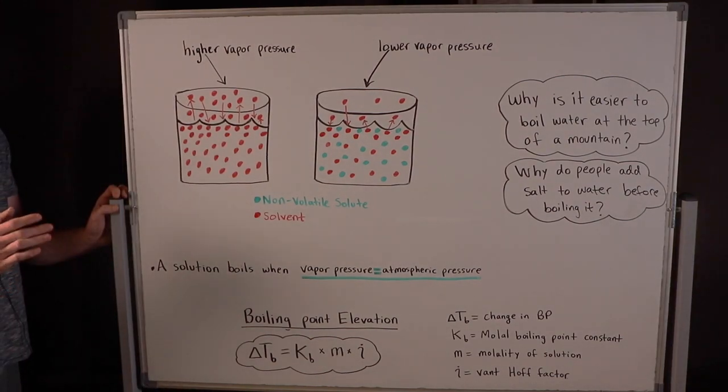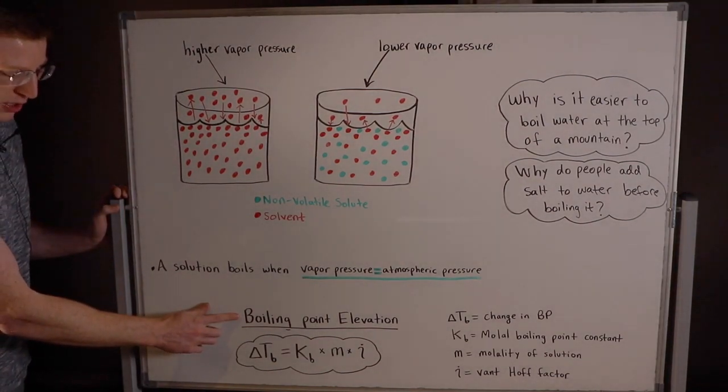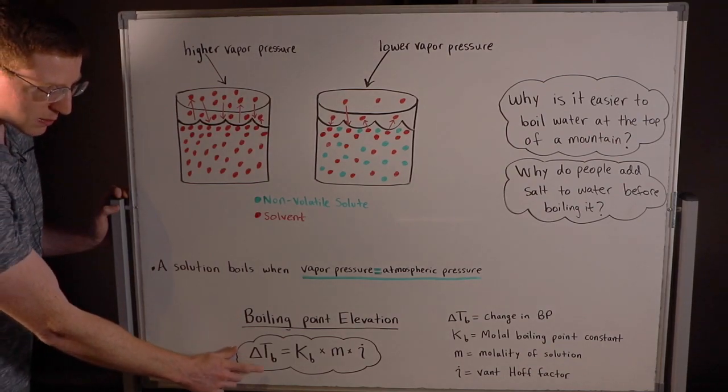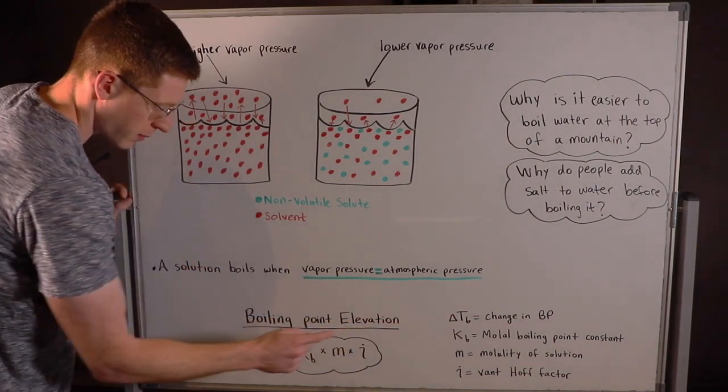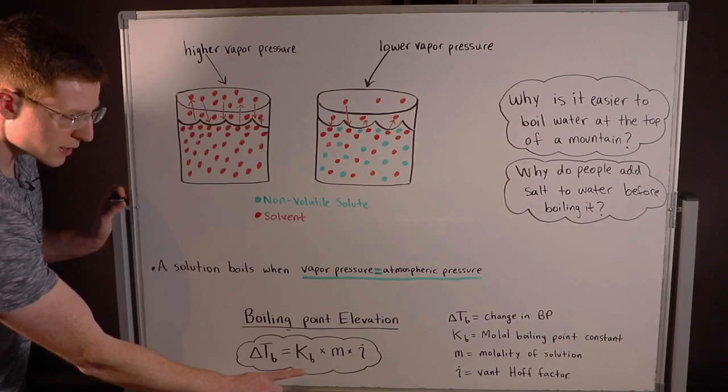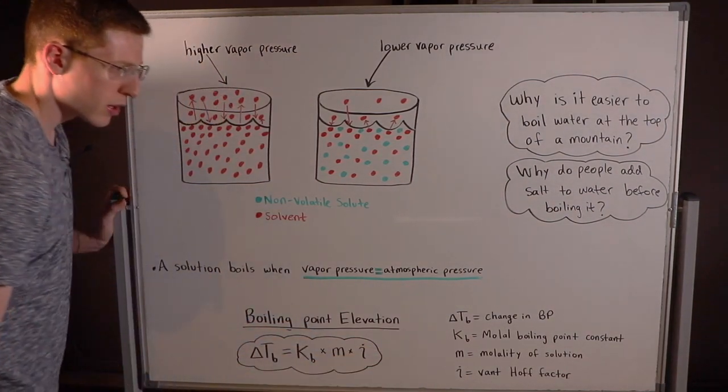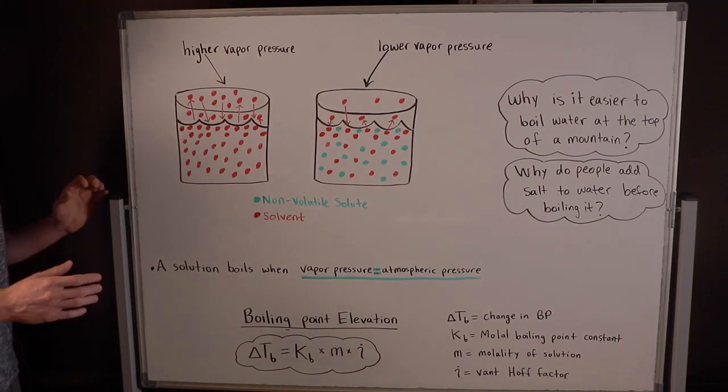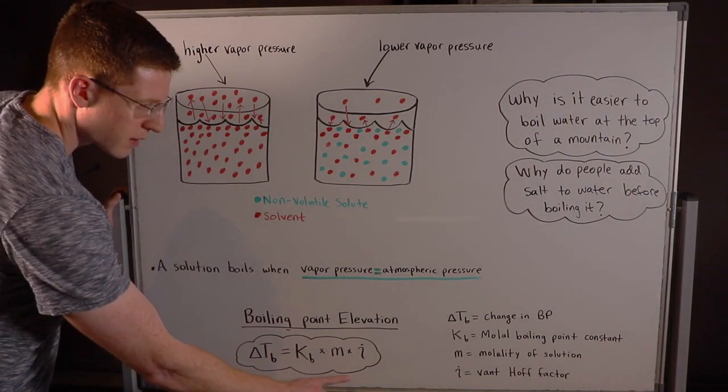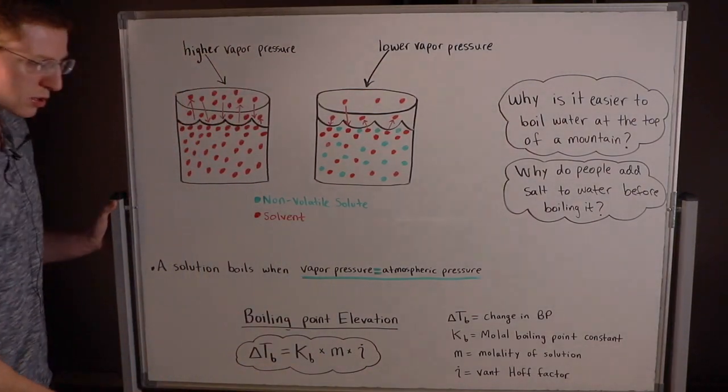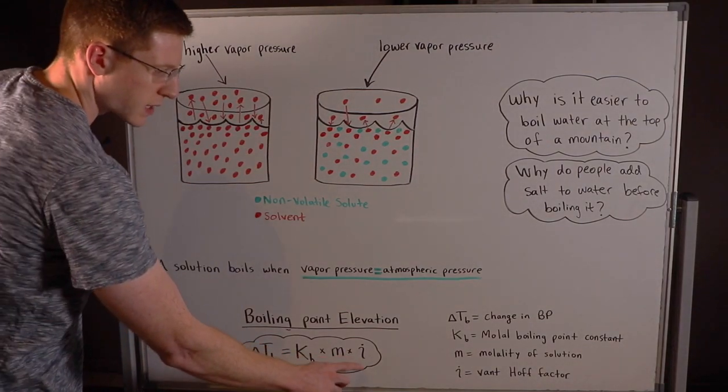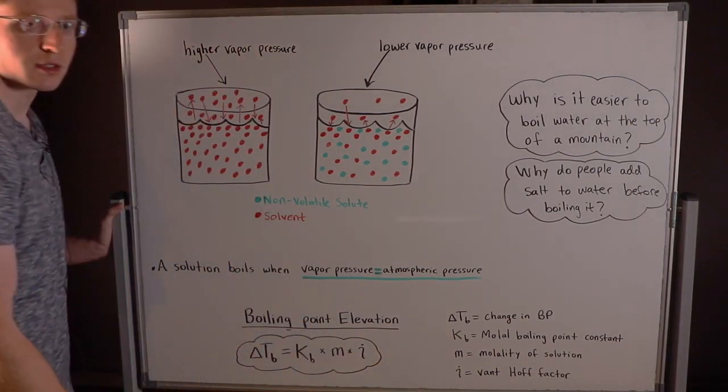So the actual equation for boiling point elevation says that delta Tb, the change in boiling point, is equal to Kb, this is the molal boiling point constant and this is different for each liquid, times m, the molality of the solution, and then times i, something called the van't Hoff factor.